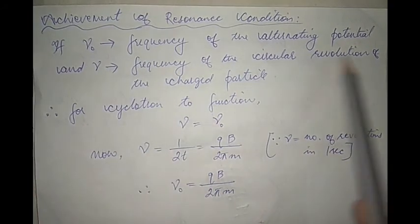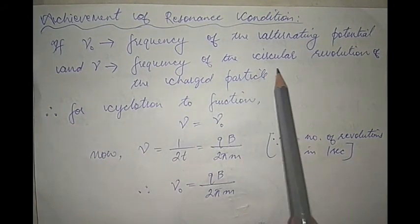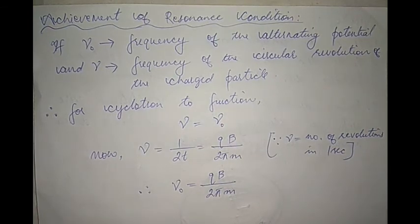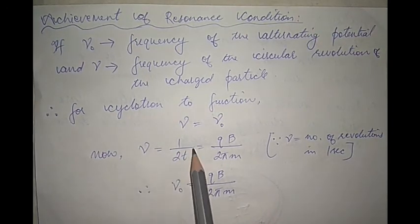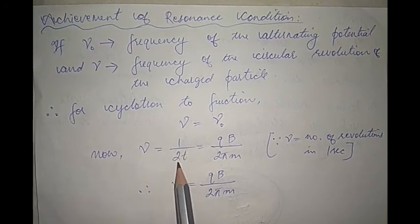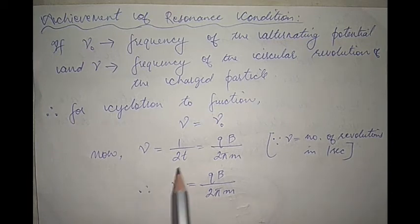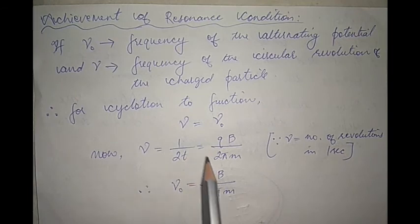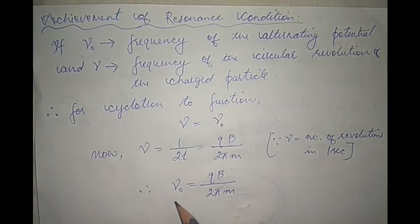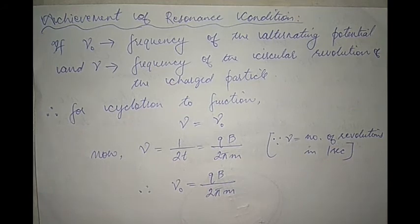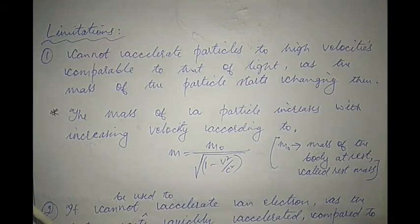If ν₀ is the frequency of the alternating potential and ν is the frequency of circular revolution of the charged particle, then for the cyclotron to function, ν must equal ν₀. The frequency ν is the reciprocal of the time period, which gives ν = qB / 2πm. Therefore, ν₀, the frequency of the alternating potential, must also equal qB / 2πm. Now let us talk about the limitations of the cyclotron.